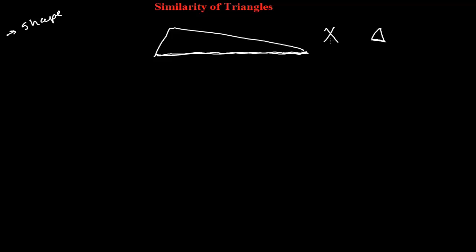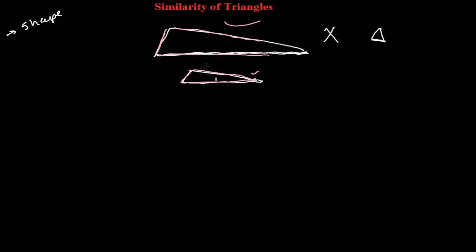Similarity means shapes should be the same but the sides may be different. If you look at another triangle something like this — now if you see these two triangles, this side and this side match similarly, this side and this side match, and you can compare: these two triangles look a little bit the same, but this one is bigger and this one is a little bit smaller.